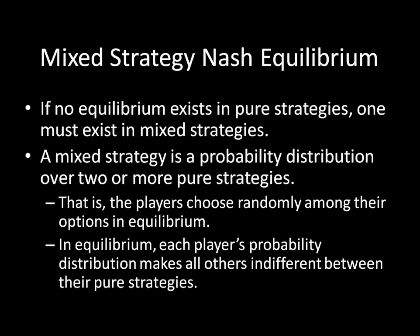A mixed strategy is a probability distribution over two or more pure strategies — that is, the players choose randomly among their options in equilibrium. And in equilibrium, each player's probability distribution makes all others indifferent between their pure strategies. It could be a 50-50 split, a 60-40 split, or some other split. We have an algorithm to find this for any 2x2 matrix, which we'll get to in another video. Here, I just want to explain the logic of why you need to play mixed strategies and why these things occur in equilibrium some of the time.